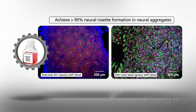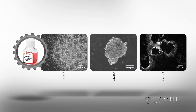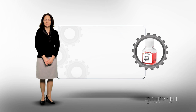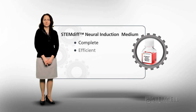When used in conjunction with AggreWell plates for uniform neural aggregate formation, StemDiff Neural Induction Medium rapidly and efficiently induces the formation of Neural Rosette clusters. These can then be selected and isolated for further experiments using StemDiff Neural Rosette Selection Reagent. Together, this is a complete, efficient, and convenient system to obtain single neuroprogenitor cells.